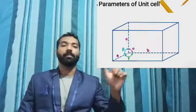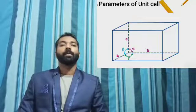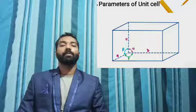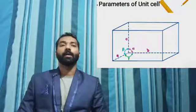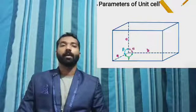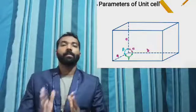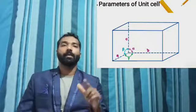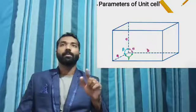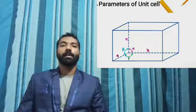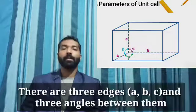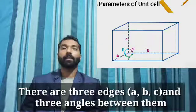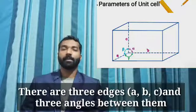The angles between the edges are alpha, beta, and gamma. Alpha is the angle between edges b and c, and similarly for beta and gamma. Together with the three edge lengths, these give us 6 parameters that define the characteristics of a unit cell.